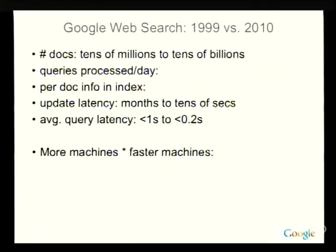When I started working on web search in 1999 at Google, these are some metrics you can use to evaluate different dimensions of a retrieval system. One is how many documents you're indexing — that scale has increased by about a factor of a thousand from 1999 to today. The second important dimension is how many queries you have to handle on a given day, and that's also grown by a factor of a thousand.